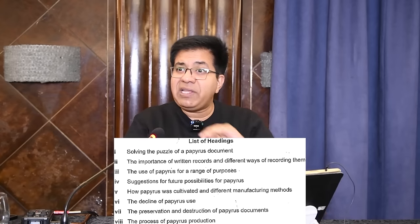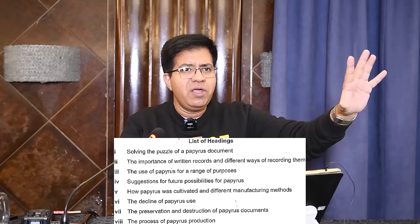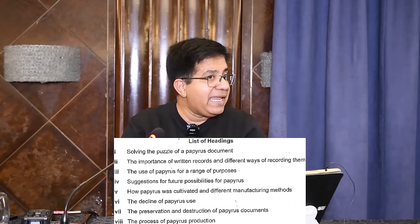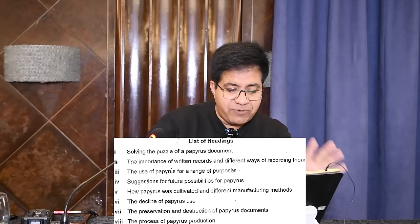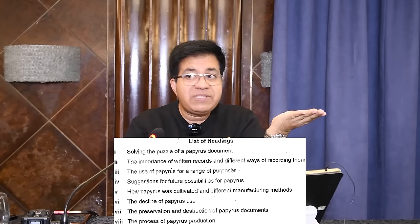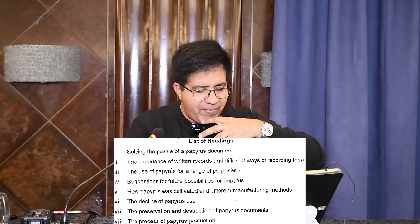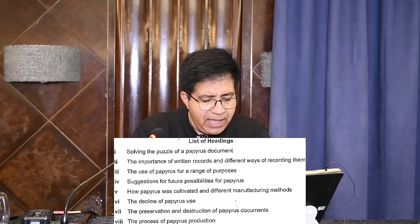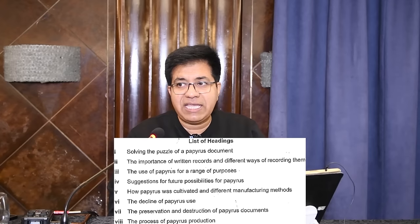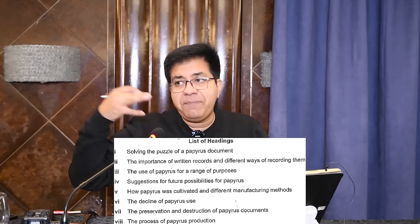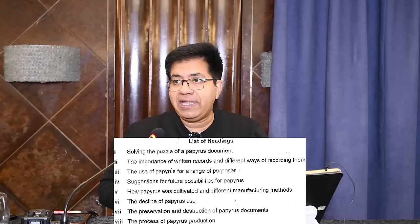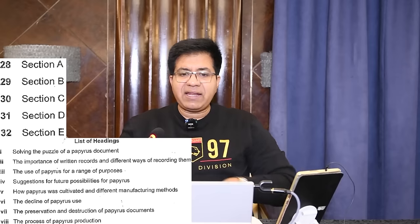Heading number six: 'Decline of Papyrus Use' — initially it was very popular, then paper was invented by the Chinese and people stopped using papyrus. Heading number seven: 'Preservation and Destruction of Papyrus Documents' — in one paragraph they talk about how to preserve them and how they get destroyed, possibly about insects. Heading number eight: 'Process of Papyrus Production.' Note that headings five and eight are confusing — five covers cultivation and manufacturing methods, eight is specifically production process.